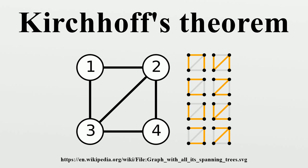Kirchhoff's theorem holds for multigraphs as well. The matrix Q is modified as follows: the entry Q_ij for i not equal to j equals minus m, where m is the number of edges between i and j. When counting the degree of a vertex, all loops are excluded.